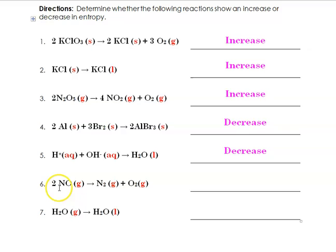For number 6, we have 2 moles of nitrogen monoxide going to 1 mole of nitrogen and 1 mole of oxygen. So everything's in the gas phase, so we're going to count the number of moles. 2 goes to 2. So this would be an example of no change. There's no net change in the entropy in this particular system. 2 going to 2, and they're all in the gas phase. So 2 moles of gas going to 2 moles of gas. Pretty much no change.